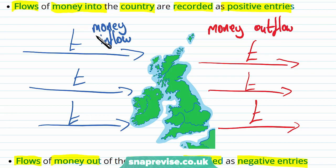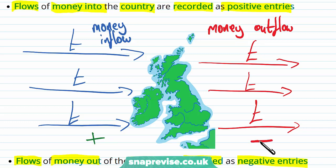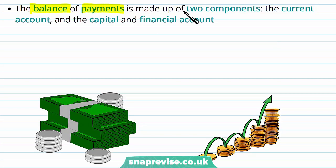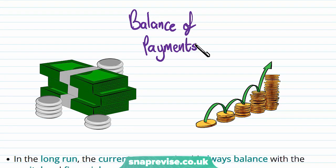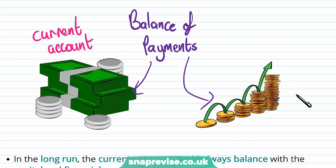We can attach a sign to these numbers for the money outflow and the money inflow — that is, whether it is positive or negative. Our money inflow is going to have a positive sign because this represents money coming in and therefore it is a positive contribution to our economy, whereas the money outflow is going to be a negative sign because that's money leaving the country. The balance of payments is going to be made up of two different components: the current account and the capital and financial account.